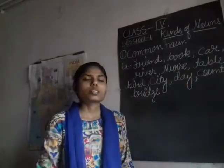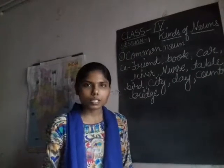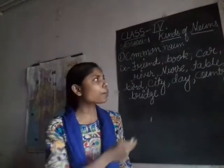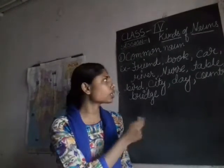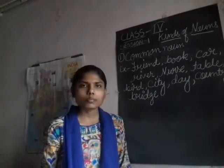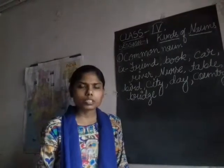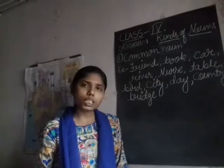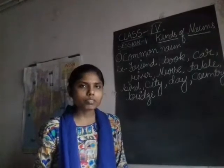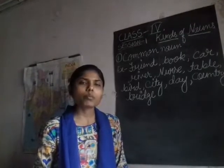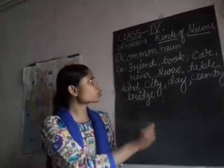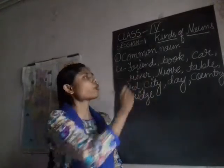Car — a driver is driving a car. The driver can drive any car, not a particular car only. River — a river is flowing very fast. It may be any river, not a particular river. There are many rivers but I am talking about all rivers. So these are the examples of common noun.